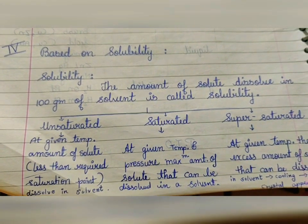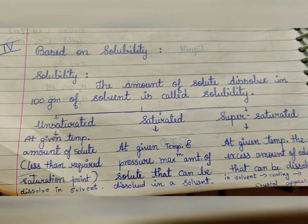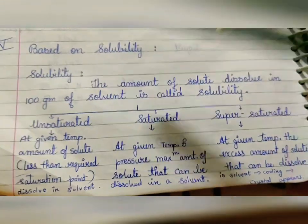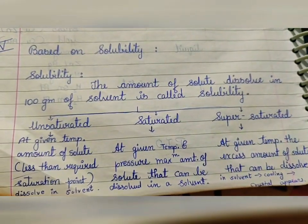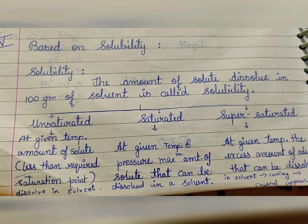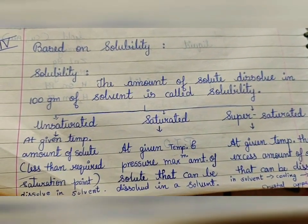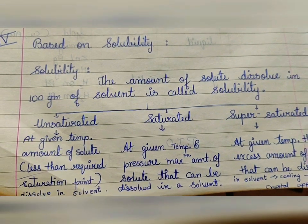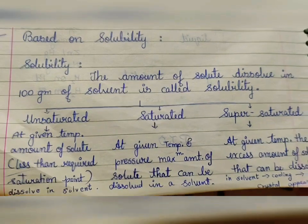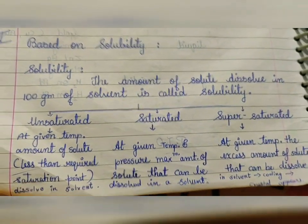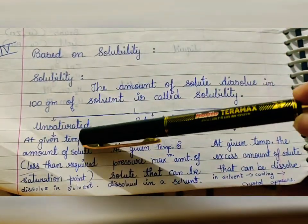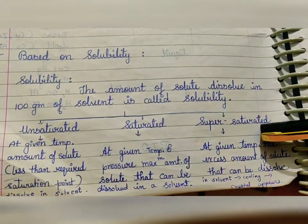The next classification is based on solubility. What is solubility? The amount of solute which is dissolved in 100 grams of solvent is called solubility. Based on solubility, solutions are divided into three major categories: unsaturated, saturated, and supersaturated.